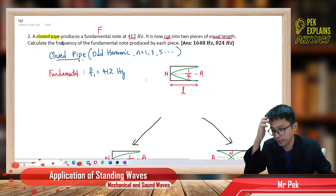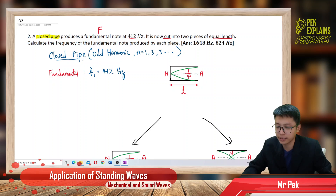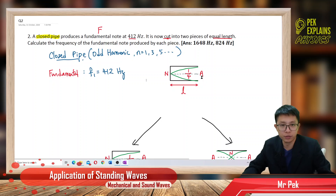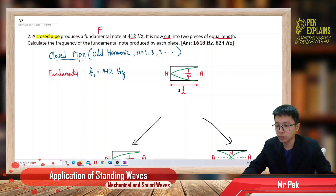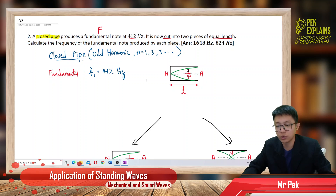For the closed pipe, the fundamental mode looks like this. The closed end is a node and the open end is always an antinode. From the diagram you can see this length is equal to one quarter lambda, because the distance between a node and an antinode is always one quarter lambda.